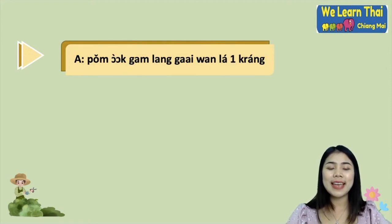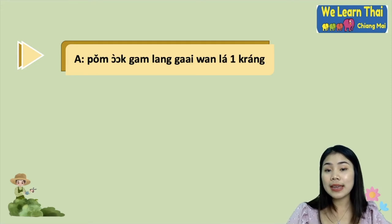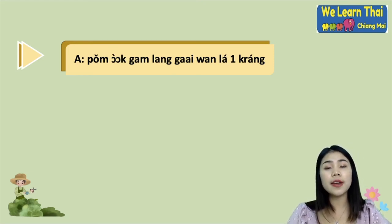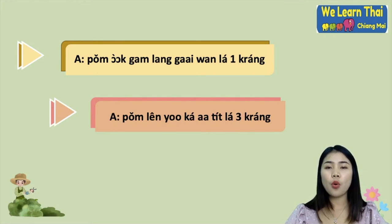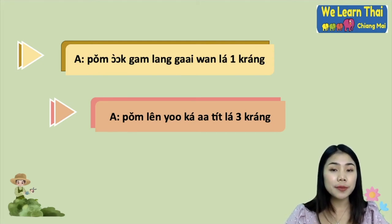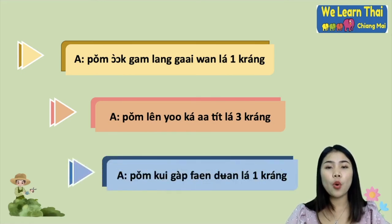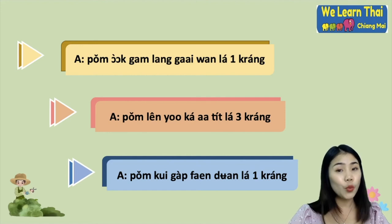Example sentences: 'Pom òok gam-lang gaai wan lá nùeng kráng' — I exercise one time per day. The word 'kráng' is the classifier for times; when you do something one time, two times, five times, you use the number and then 'kráng'. 'Pom lên yo-gâa aa-tít lá sǎam kráng' — I do yoga three times a week. 'Pom kui gàp faen duen lá nùeng kráng' — I chat with my girlfriend once a month.